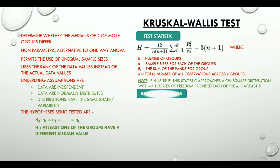The rejection criteria for the Kruskal-Wallis test is: if the test statistic H is greater than the critical value at significance level alpha and k-1 degrees of freedom, we reject the null hypothesis.